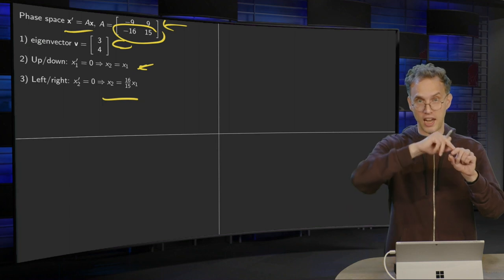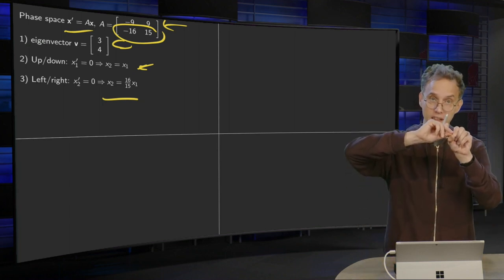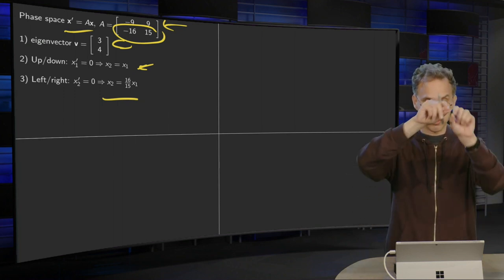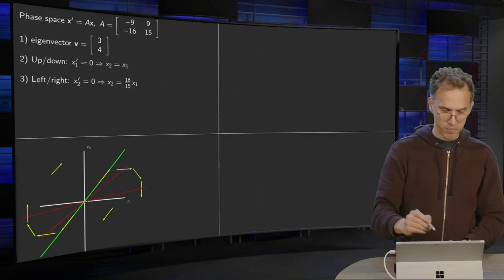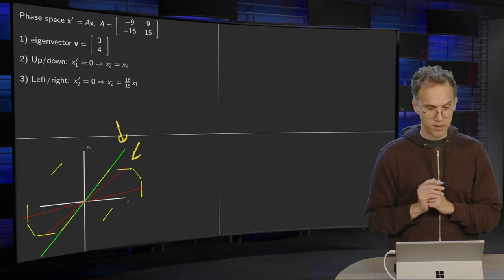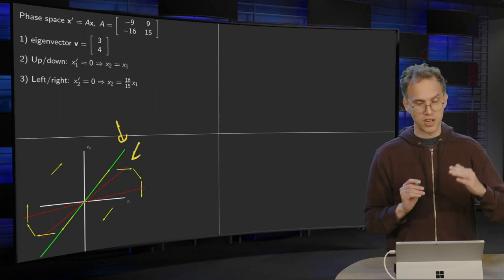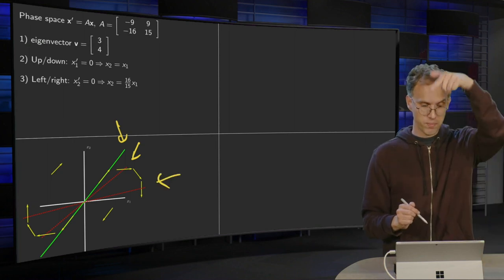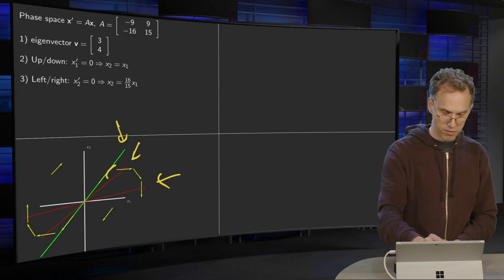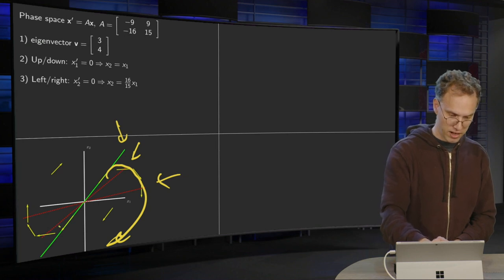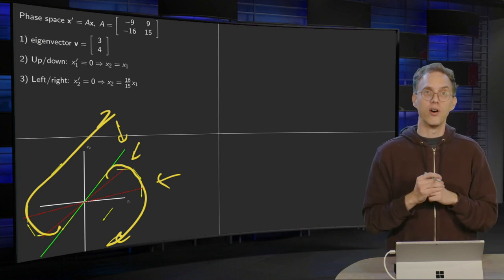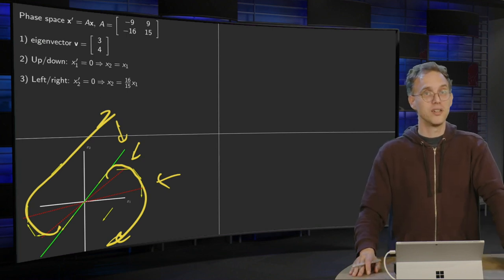So we draw the eigenvector, the line X1 equals X2 (where we move up and down), and the line X2 equals 16 over 15 X1 (where we move left and right). The eigenvector is drawn here; the line where we move horizontally is where X2 equals 16 over 15 X1 — a slightly lower slope — and X2 equals X1 is where we move up and down. Then we can make the full picture. Suppose you start over here, you move something like this. This is a way to get an idea of the behavior of the solution of our differential equations, as now we are able to draw the phase space.